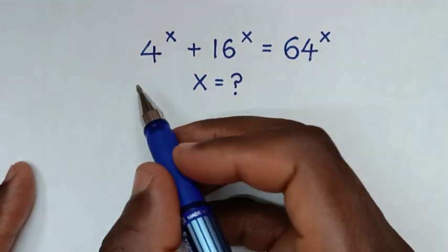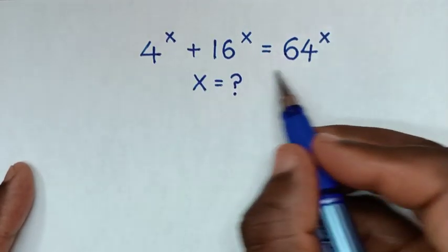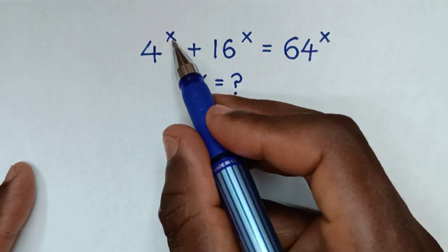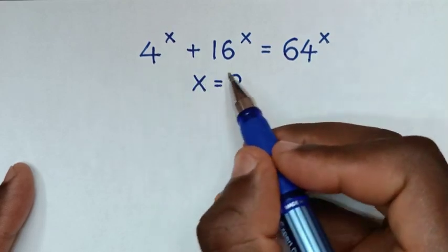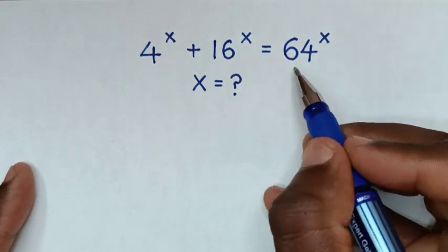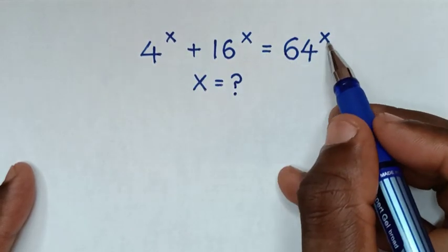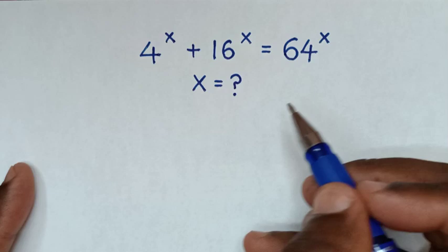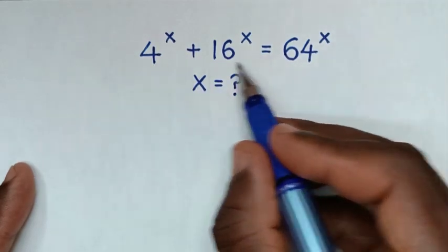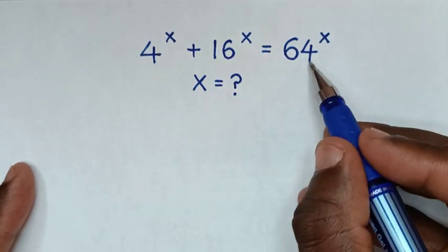Hello, you are welcome to solve this math problem, which is 4 power of x plus 16 power of x is equal to 64 power of x, to find the value of x from this equation.